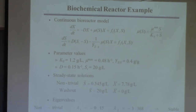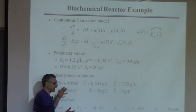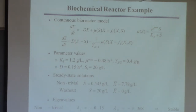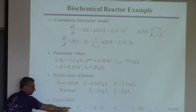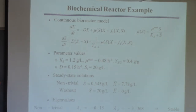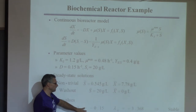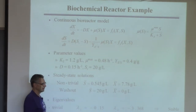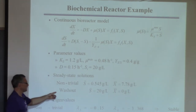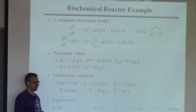To find the linearized model you compute four derivatives — F1 and F2 with respect to the two variables — forming the A matrix and checking eigenvalues. If you linearize about the interesting steady state, you find two eigenvalues both with negative real parts, meaning that steady state is stable.